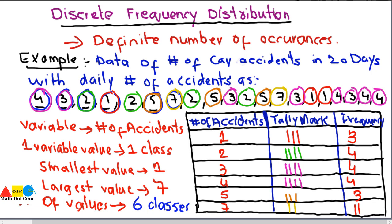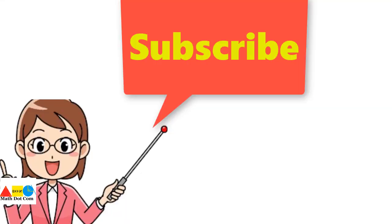This is the discrete frequency distribution table for the given data. Remember, this type of table is valid only when the data is countable and you can have one class for each variable value. Otherwise you use a continuous frequency distribution table, which we will cover in the next lecture. Thank you for watching — if you liked this video, please subscribe to our channel for more updates.